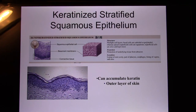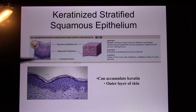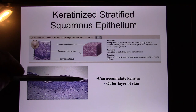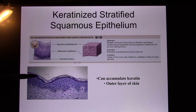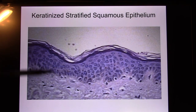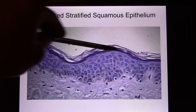Now let's look at keratinized epithelium. Keratin is a protein — a wax-like molecule — that replaces the water inside the cell. Your skin is keratinized stratified squamous epithelium. The top layer of your skin is dead keratin, and its function is to prevent water loss.